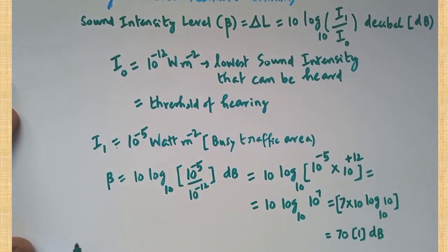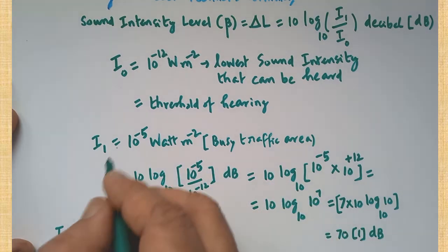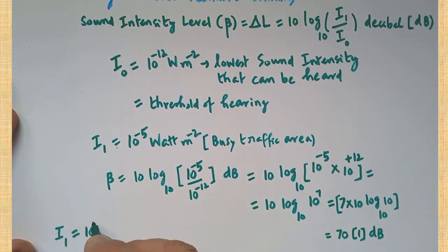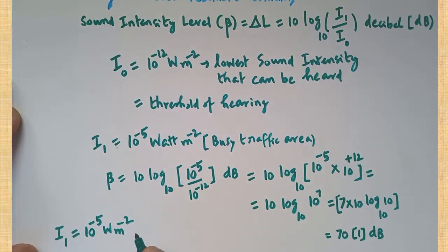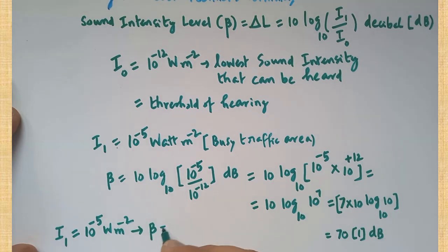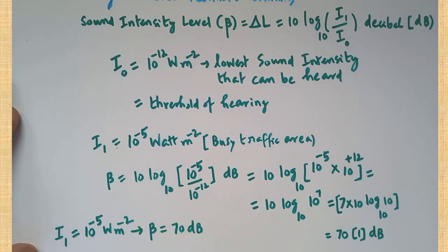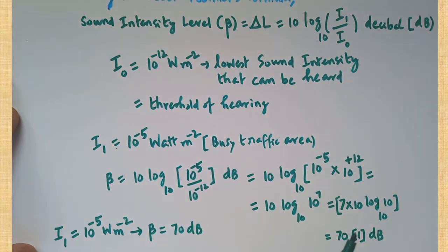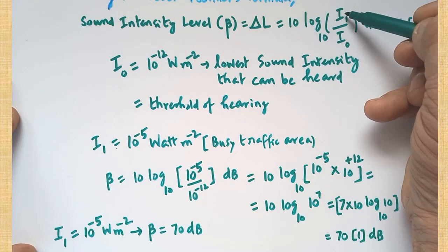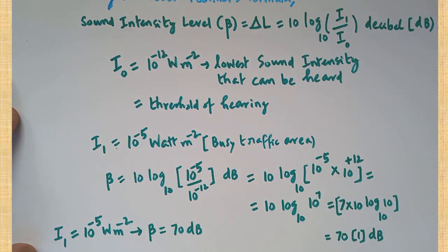So the meaning is: the sound intensity value produced in the busy traffic area is 10 to the power of minus 5 watts per meter squared, and its equivalent sound intensity level is beta equals 70 dB. By using this simple Weber-Fechner formula, we are able to convert any I1 value into beta, the sound intensity level. Thank you.